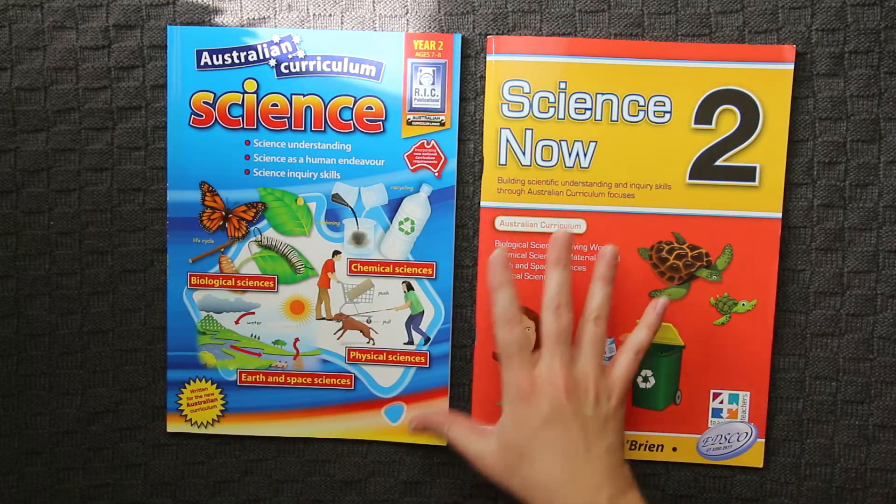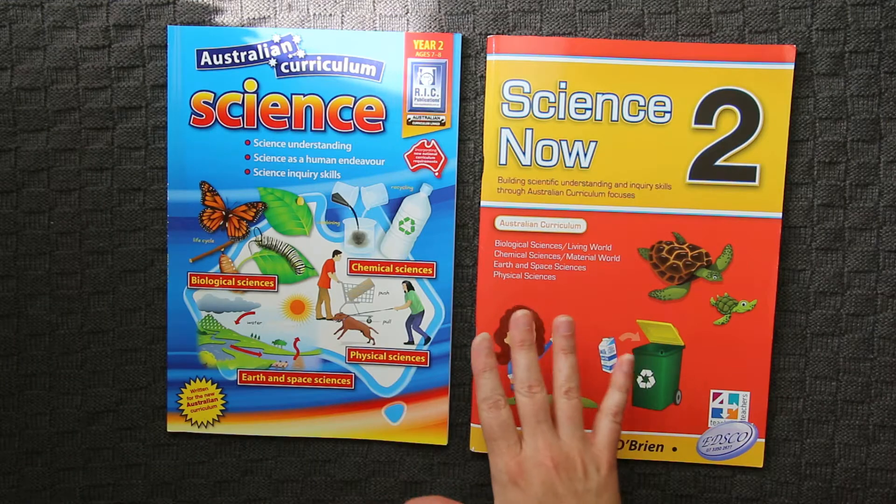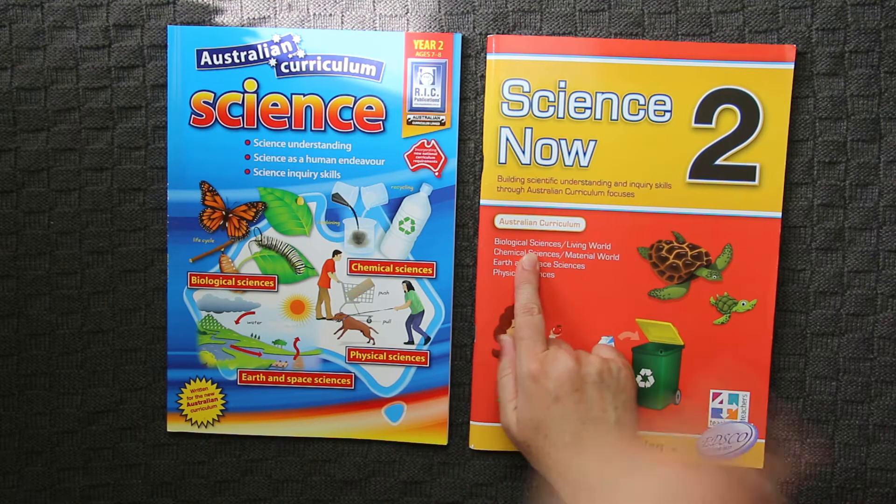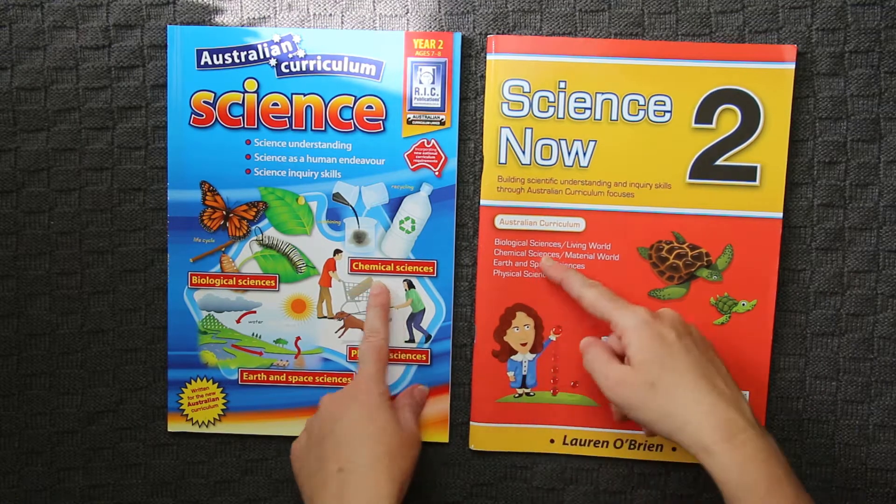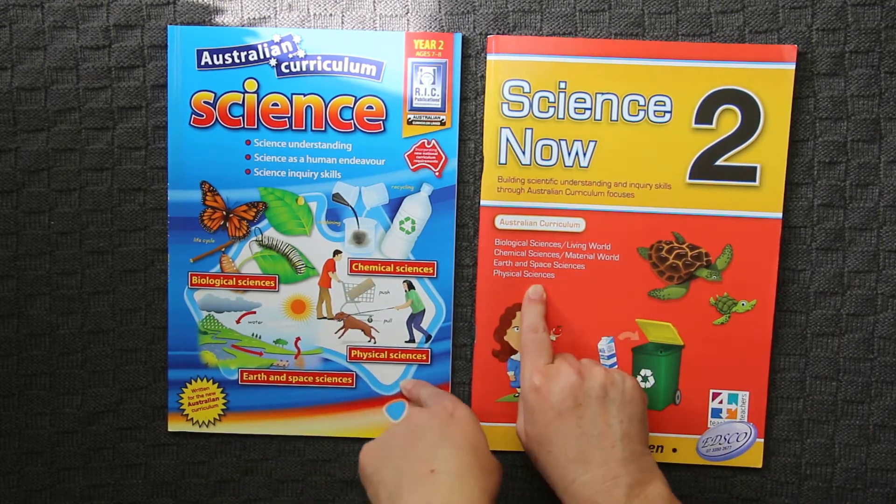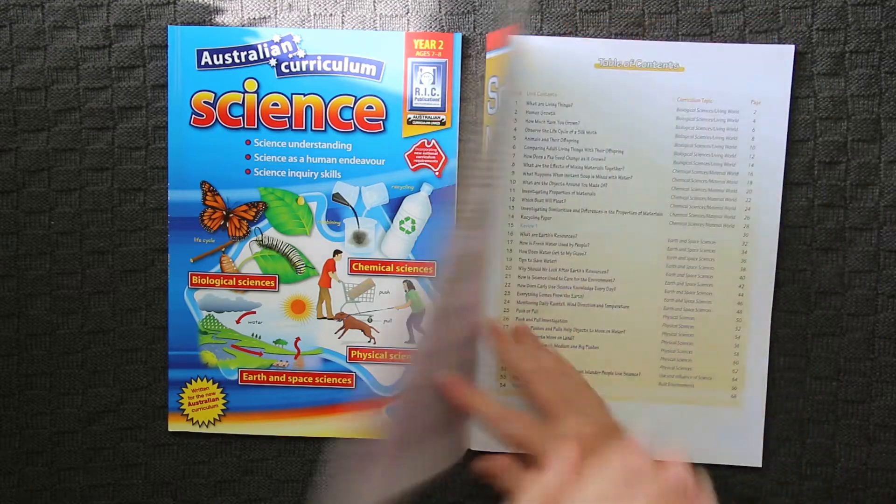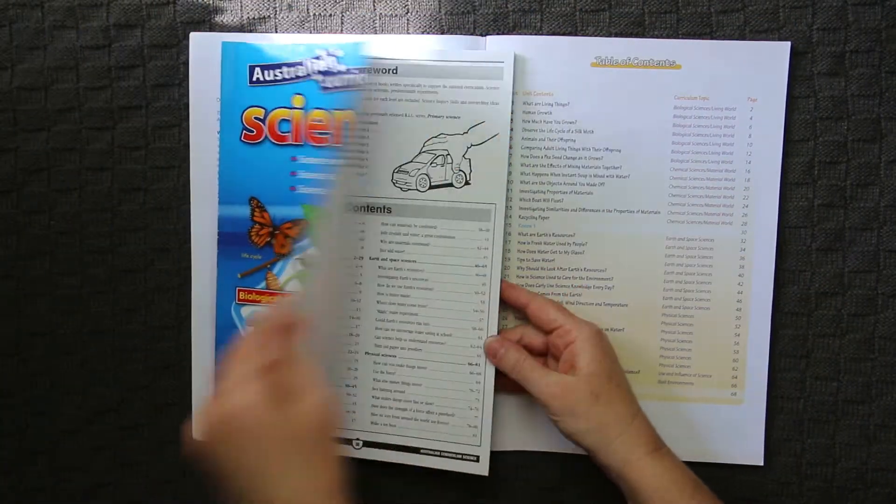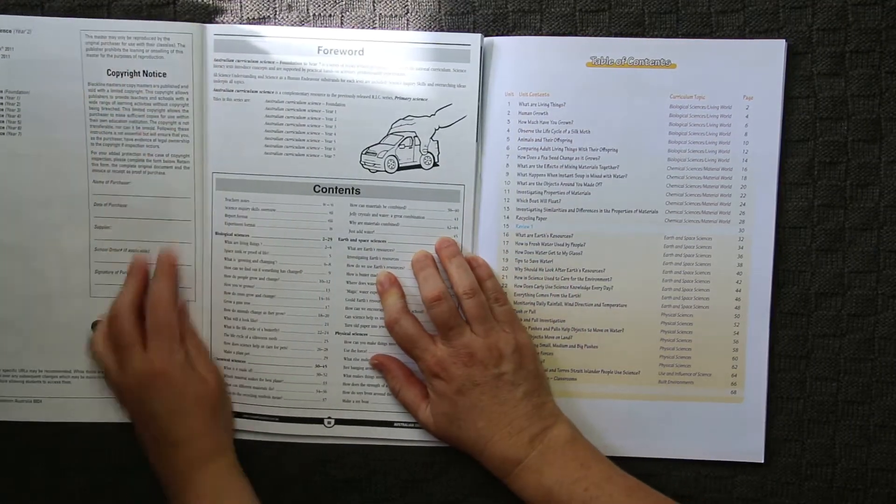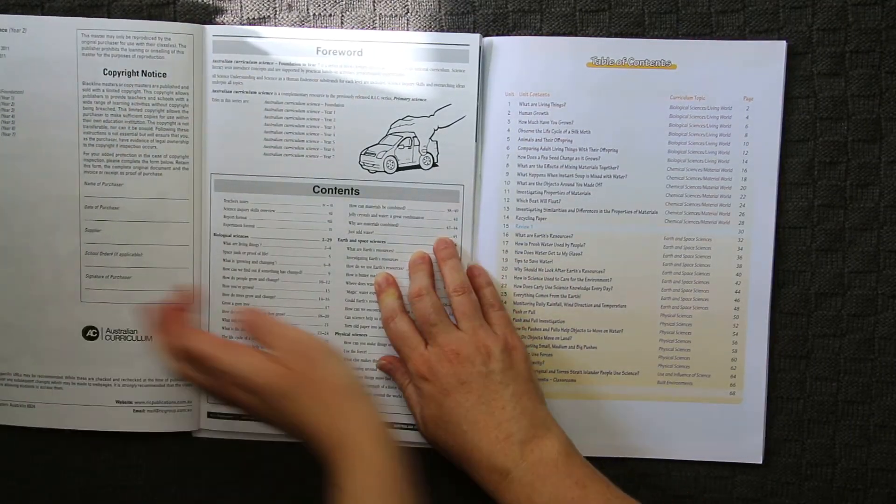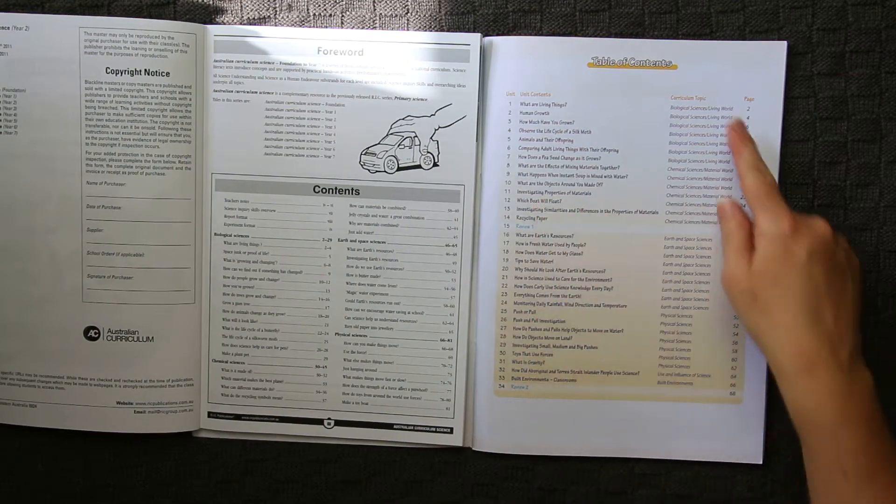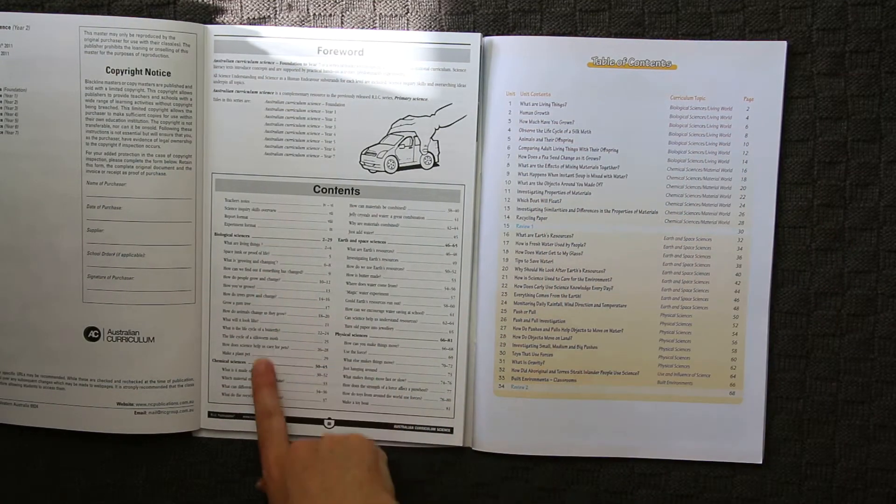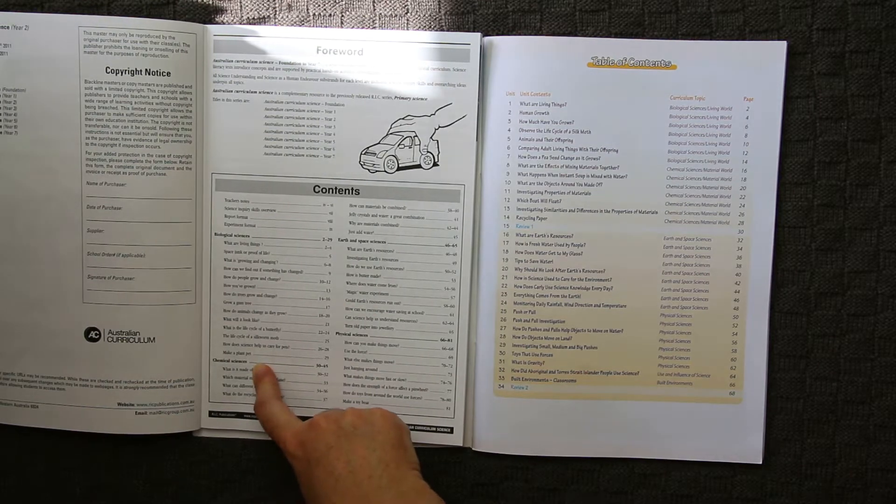Each of the grade two science books break down the four main branches of science: the biological sciences, the chemical sciences, earth and space, and physical sciences. So we have the table of contents. I'll try and have them both showing. Here we've got biological science or the living world first up, and you have the same thing here in this particular workbook.